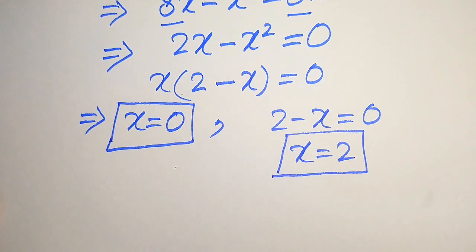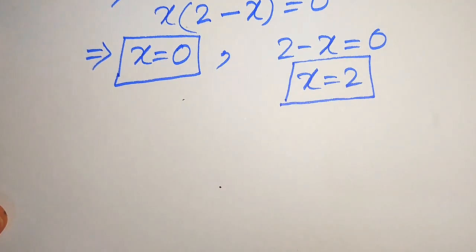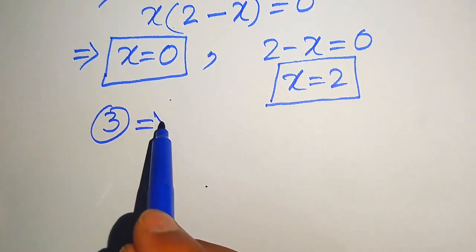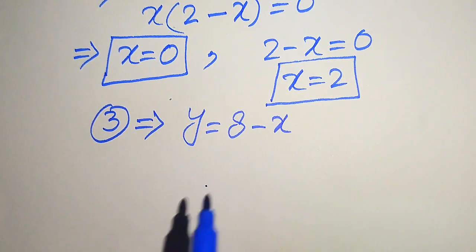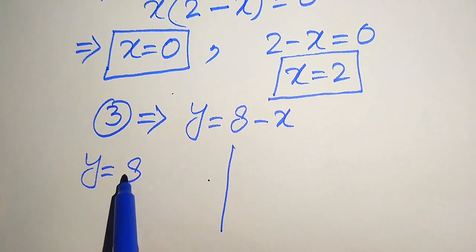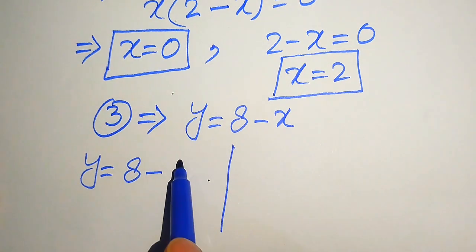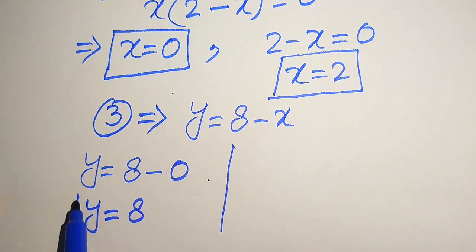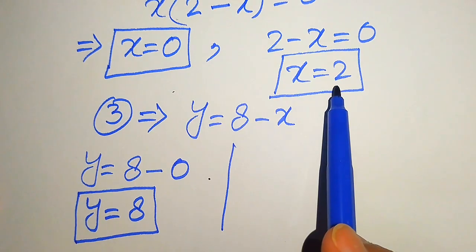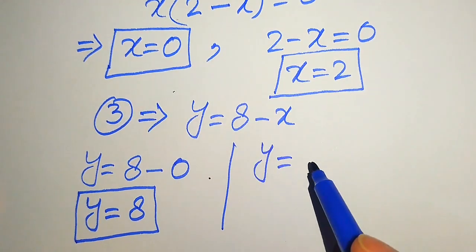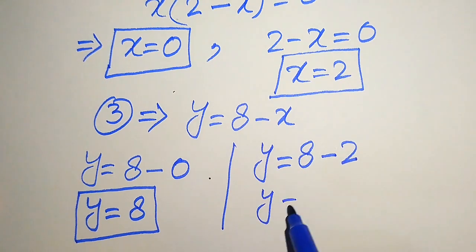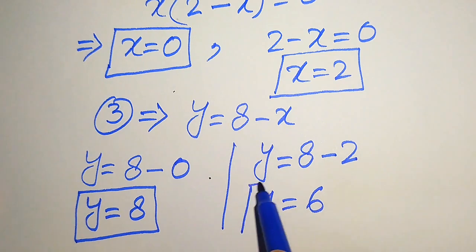Now we find the values of y corresponding to each value of x using equation number 3: y equals 8 minus x. When x equals 0, y equals 8 minus 0, so y equals 8. When x equals 2, y equals 8 minus 2, so y equals 6.